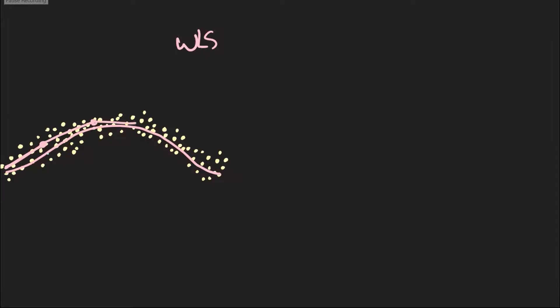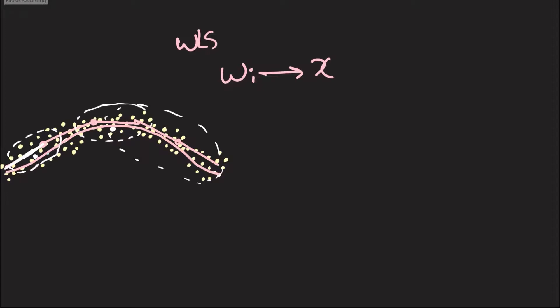That non-linear curve can be approximated by a bunch of straight lines. Based on this, we assign weights that depend on the prediction point. If you're trying to predict something at a particular location, we give high weights to points in the neighborhood and low weights to far-away points, ending up with a local straight line. The same applies at any prediction point — this gives a fair approximation to the non-linear curve.